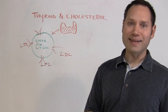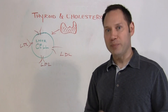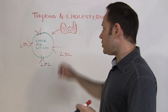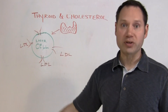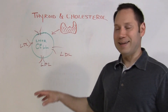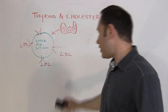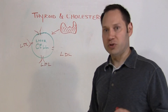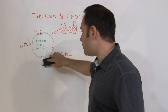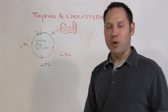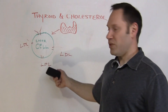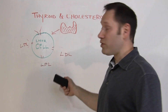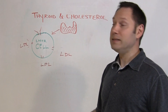So when your thyroid isn't functioning properly — when you've got hypothyroidism and you're not making enough thyroid hormone — those cells in the liver, adrenal glands, and everywhere else won't get that signal. It will actually downregulate these receptors, so the receptors on these cells won't be expressed as much, which means you'll have more LDL cholesterol, more LDL particles floating around in your blood.